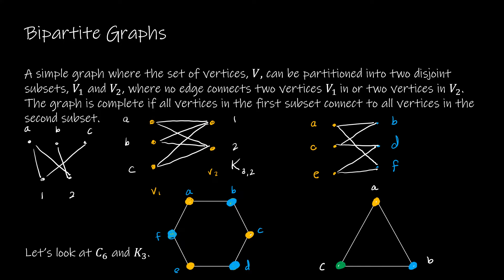Let's look at one more: C5, which is essentially a pentagon with vertices A, B, C, D, E. Starting at A with blue, B and E can both be yellow. Then D can be blue. But C is connected to both a yellow vertex (B) and a blue vertex (D), so it needs a third color. Therefore, C5 cannot be bipartite because it requires three colors.